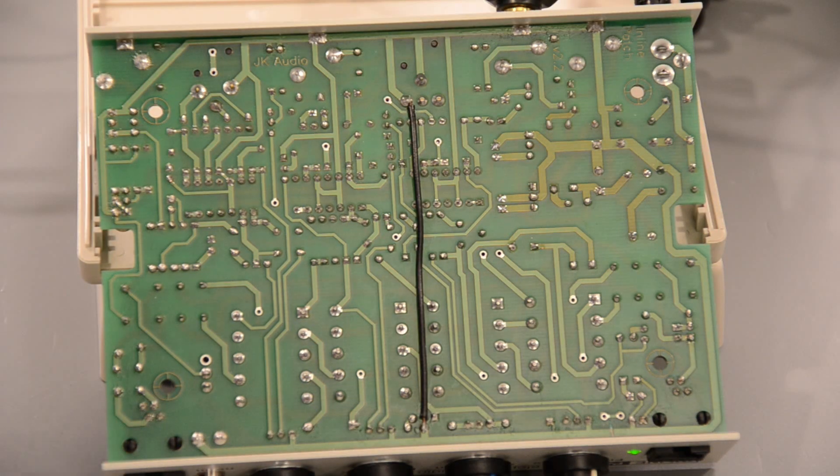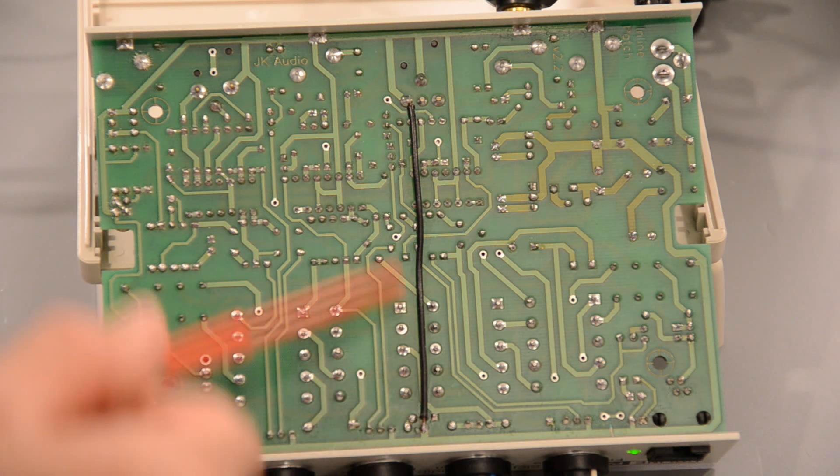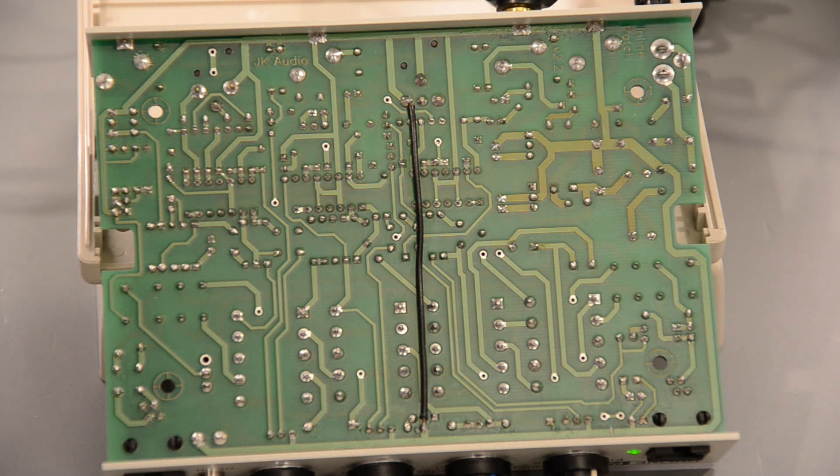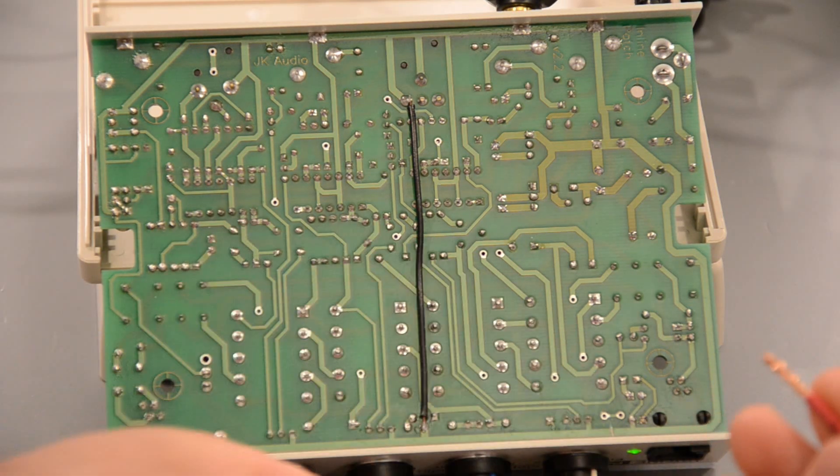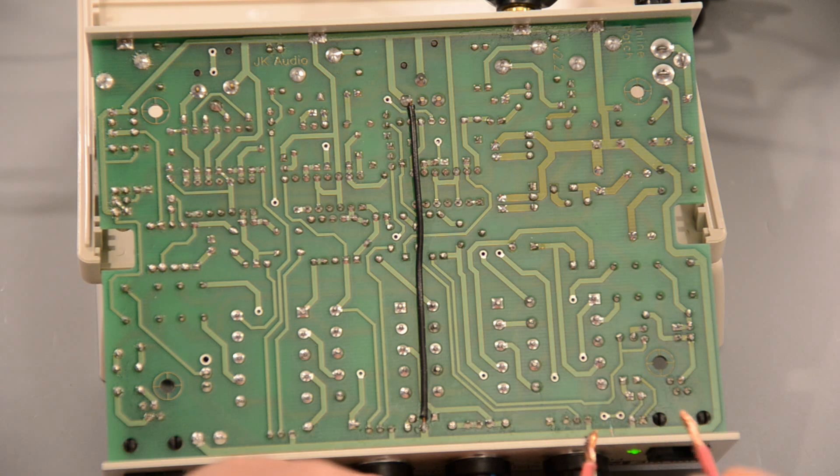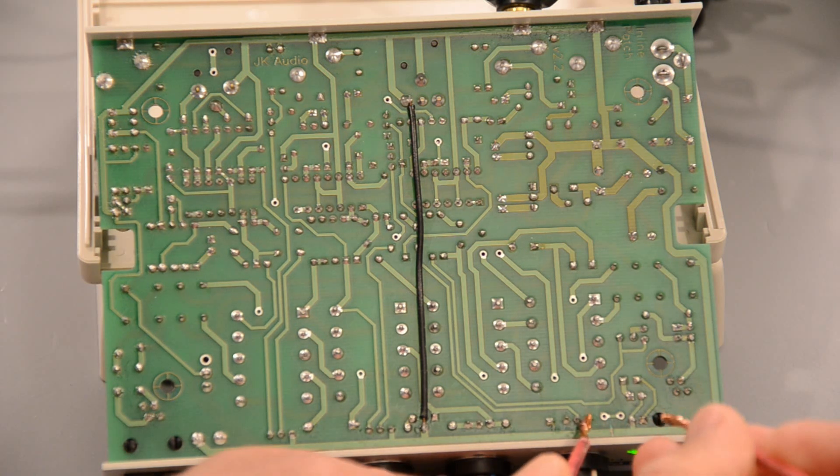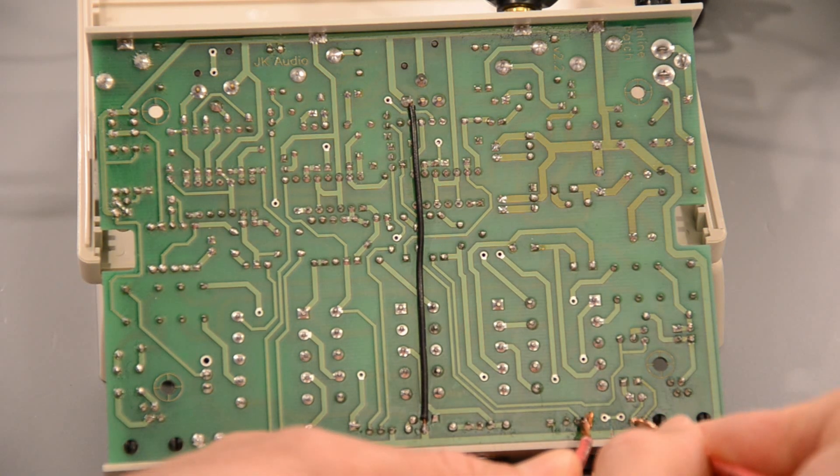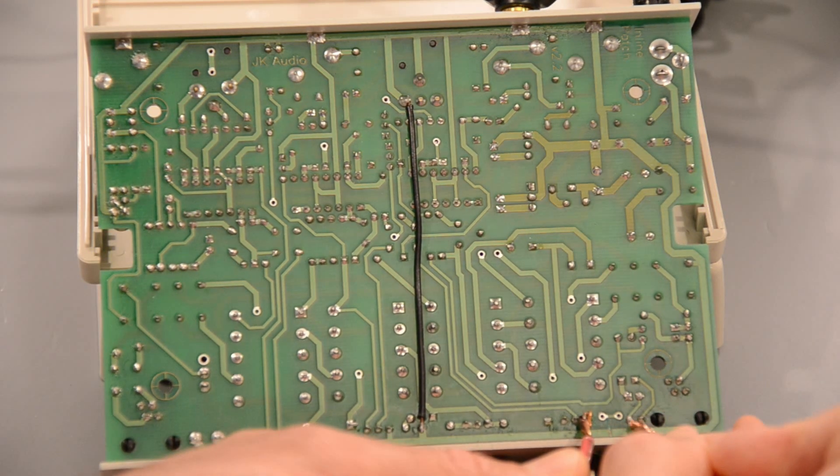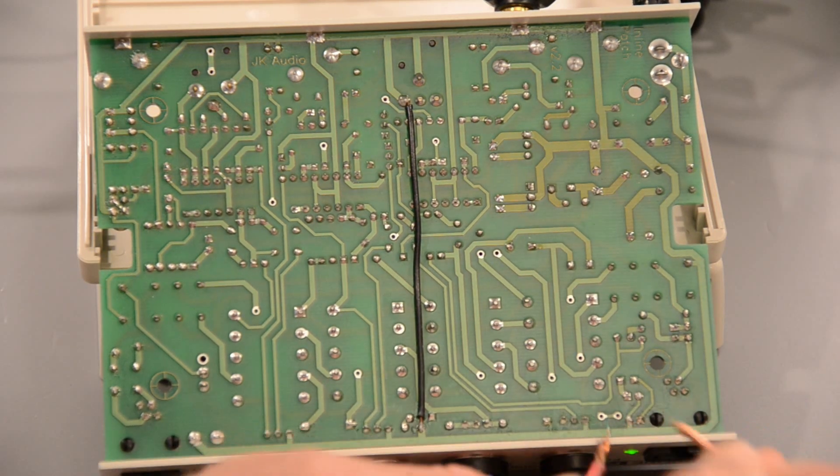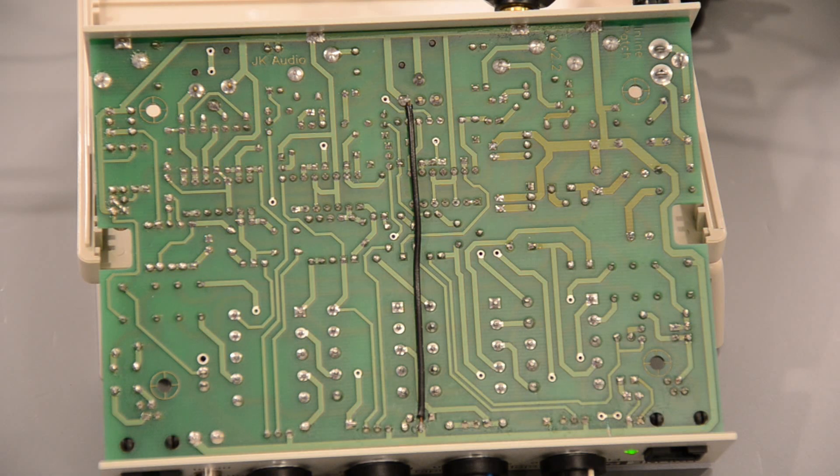Here we are after the fix. I made a cut here in the ground trace and reconnected the ground rails through this wire here. Now, if I go and short across the connection that I just cut, you'll hear that the powerline noise comes back. But as it stands now, there's really no noise to be heard.